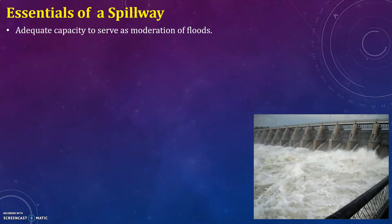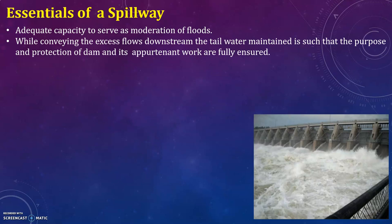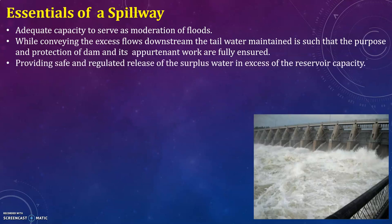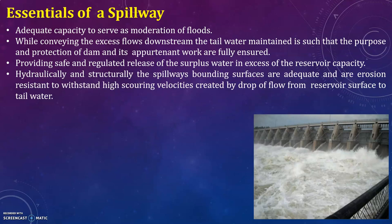The spillway should also be accompanied by energy dissipation works on its downstream side and should be economical. The essentials of a spillway include: adequate capacity to serve as moderation of floods; while conveying excess flows downstream, the tail water is maintained such that the purpose and protection of the dam and its appurtenant works are fully ensured; and providing safe and regulated release of surplus water in excess of the reservoir capacity. The bounding surfaces of the spillway must be hydraulically and structurally adequate and erosion-resistant to withstand high scouring velocities created by the drop of flow from reservoir surface to tail water.